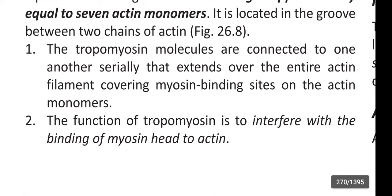The tropomyosin molecules are connected to one another serially, extending over the entire actin filament and covering myosin binding sites on the actin monomers. The function of tropomyosin is to interfere with the binding of the myosin head to actin.